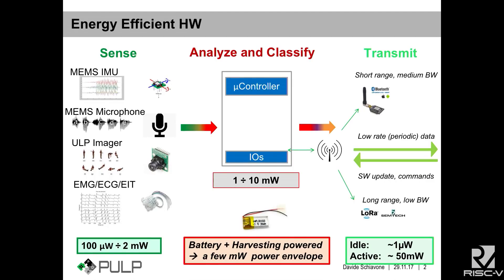So what do we do with PULP? We do near-sensor computation. Here you can see we have different kinds of sensors with different bandwidth and computational requirements. PULP is programmable, so you can program it for your own algorithm, and to make that happen, we build several cores.